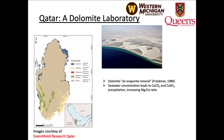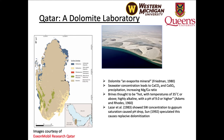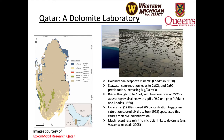The association between arid depositional environments and dolomite formation has long been appreciated, leading Friedman to term dolomite an evaporite mineral. This association was proposed by Illing and others to result from the chemical evolution of seawater during evaporation to one with high magnesium-to-calcium ratios, with brines thought to be hot — temperatures greater than 35°C — highly alkaline, with pH of 9 or higher. However, in 1983 Lazar showed seawater concentration to gypsum saturation actually causes pH to drop. The focus of Qatar work was to understand this association and apply it to the broader question of why dolomite is more common in the rock record relative to today.